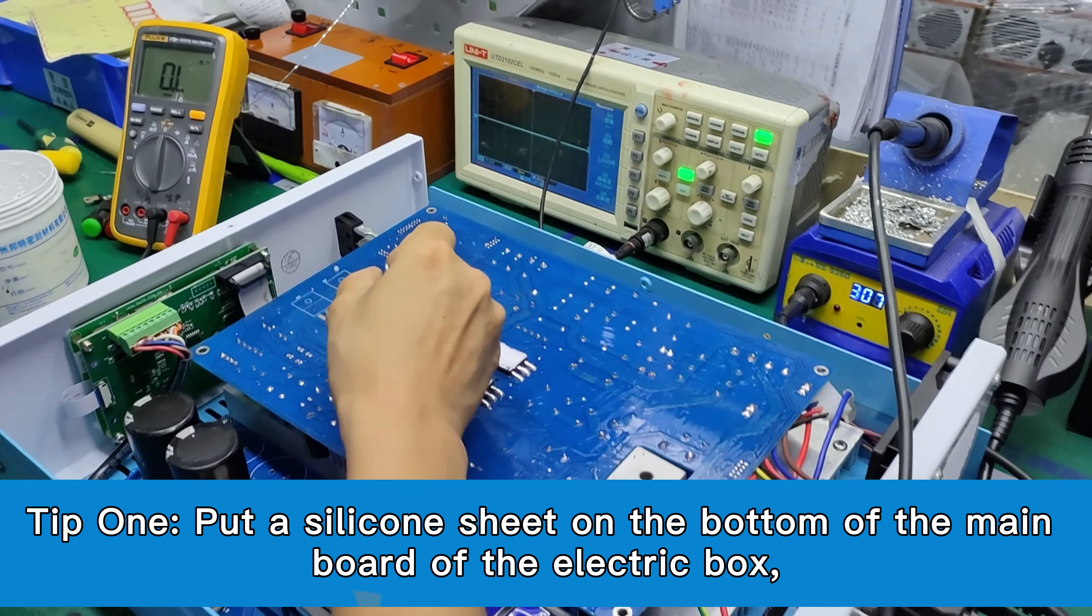This is to prevent the power supply valve from dripping and protect the internal components of the electric box.